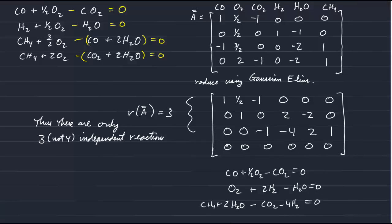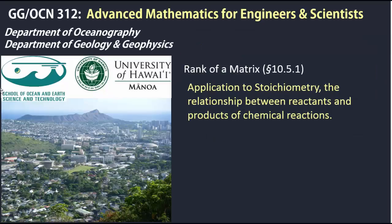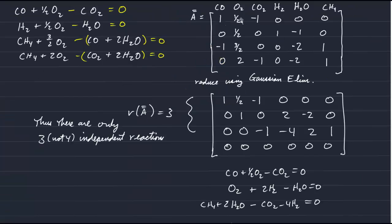So this was a relatively simple example of analyzing the basic or independent reactions in stoichiometry using the properties of the rank of the matrix representing all possible reactions.